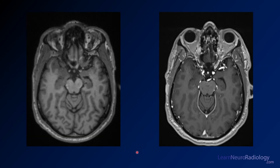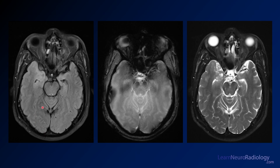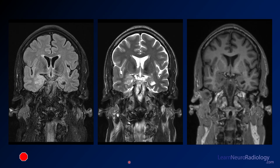Or maybe not. This is a pre-contrast T1 and post-contrast T1. We're looking at a little bit of a subtle abnormality here. I'm going to go back and give you a little bit of a clue — I want you to look at this right temporal lobe here. Maybe it's a little bit asymmetric.